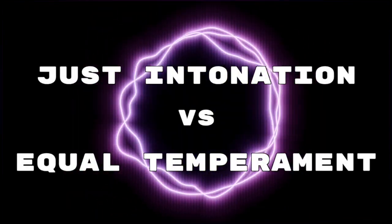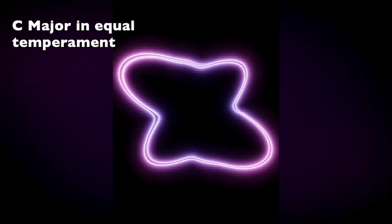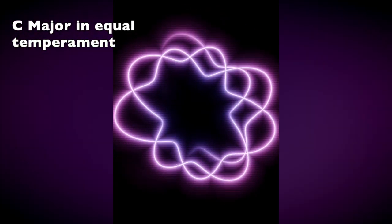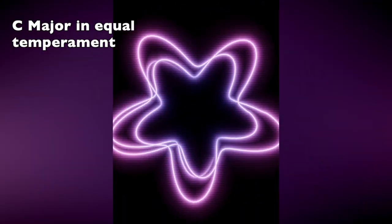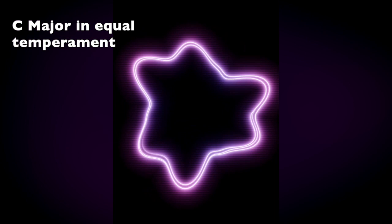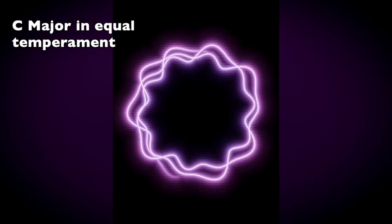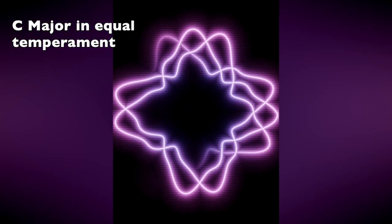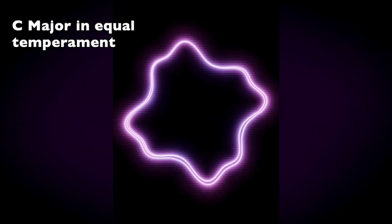The image you see on the screen is from an app called HelixTuner. Here's a C major scale played in equal temperament. The image becomes stable when the pitch is in tune. It rotates right when the note is sharp and left when it's flat.